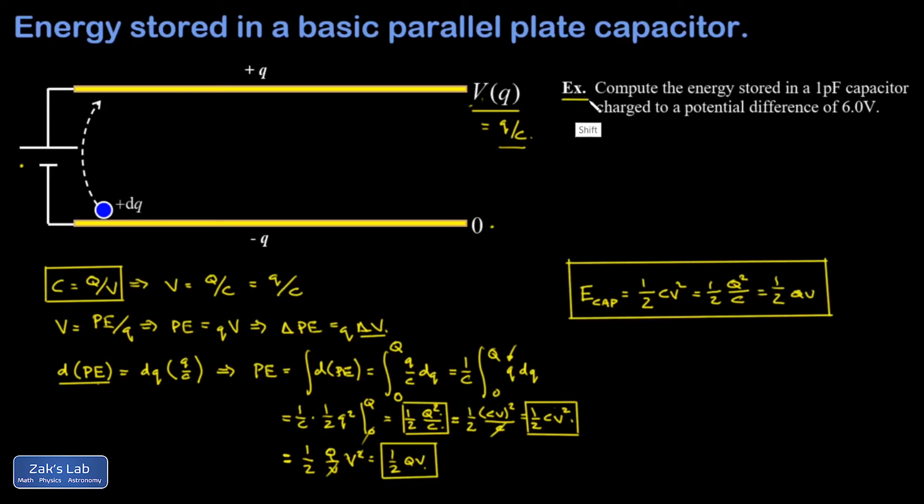All right, so let's apply our new formulas to a simple example. I want the energy stored in a 1 picofarad capacitor charged to a potential difference of 6.0 volts. And so, the energy stored in the capacitor is just 1 half cv squared. So, that's 1 half times 10 to the negative 12 farads for the capacitance. So, pico means 10 to the negative 12 times my potential difference of 6 all squared. And I end up with 1.8 times 10 to the negative 11 joules.